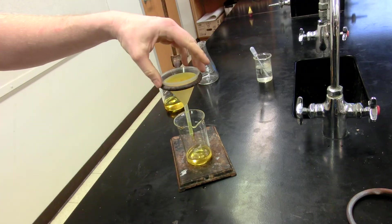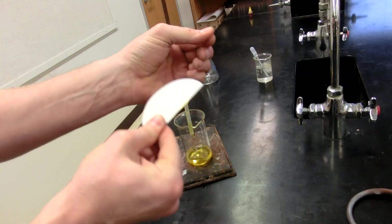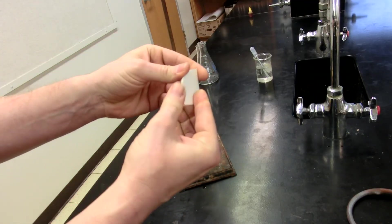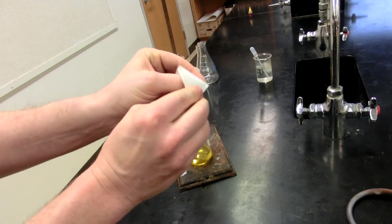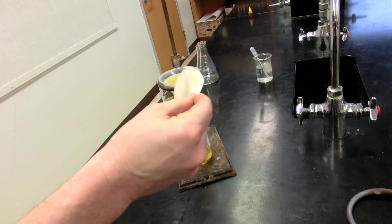This is your standard funnel. We talked about folding filter paper, which was you fold it in half, fold it in half a second time. And when you stick it into the funnel, you want to make sure that you have three layers of paper on one side and one layer of paper on the other.